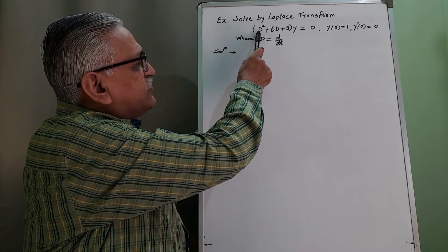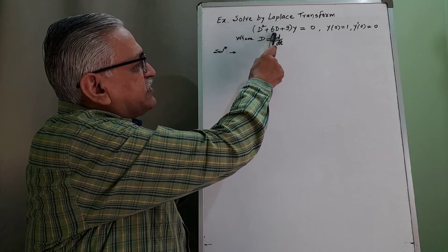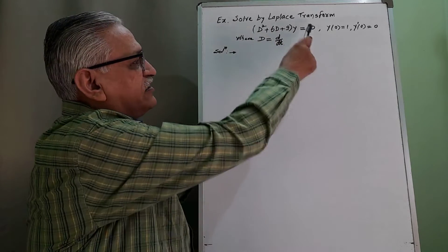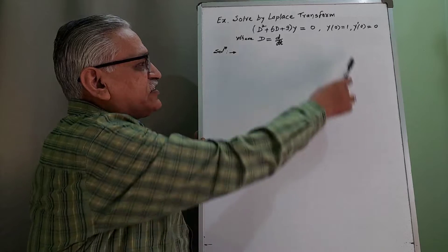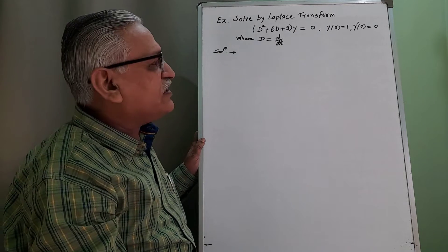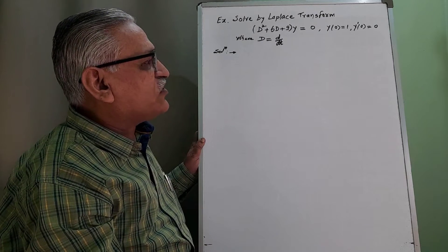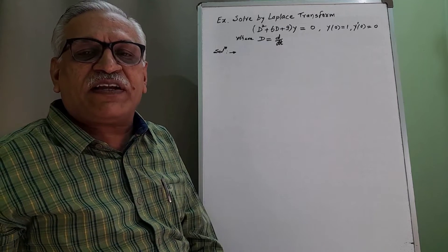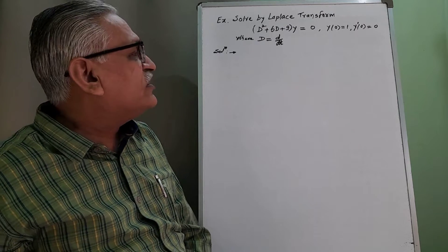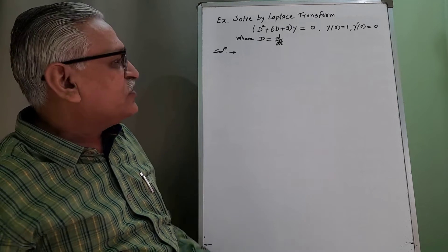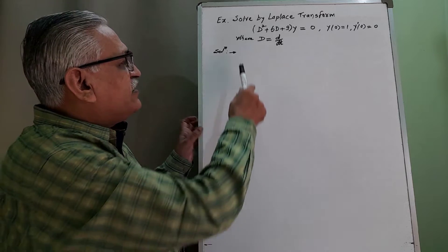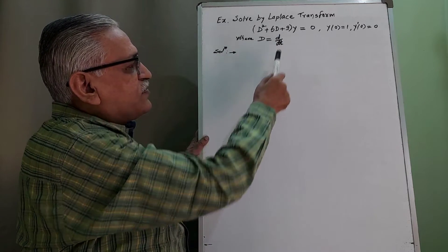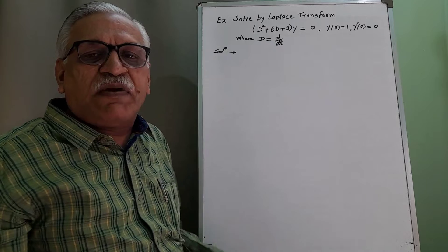The differential equation is (D² + 6D + 9)y = 0, with initial conditions y(0) = 1 and y'(0) = 0. These are initial conditions defined at t = 0, where capital D stands for the derivative operator d/dt.